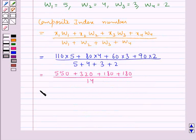And this is equal to 1230 upon 14, then 2 times 7 is 14 and 2 times 615 is 1230, and 615 upon 7 is equal to 87.85.